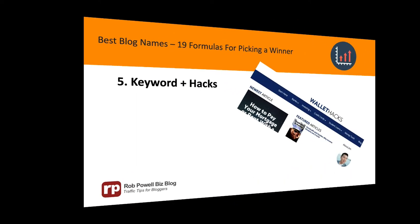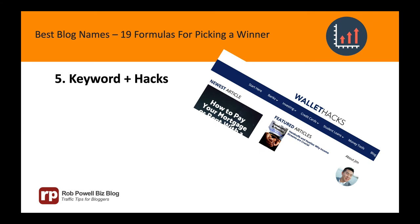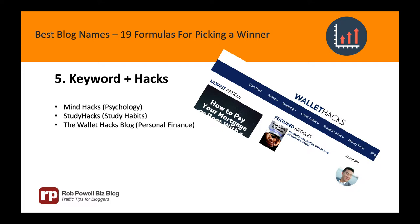Formula 5: Your keyword plus the word 'hacks.' The Merriam-Webster dictionary defines a hack as a simple and clever tip or technique for accomplishing some familiar task more easily and efficiently. So a good blog title formula is 'hacks' plus your keyword. For example: Mind Hacks, Study Hacks, The Wallet Hacks Blog, The Travel Hack, and Life Hacks and Tips.